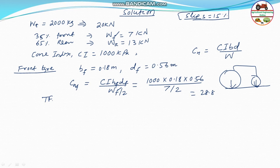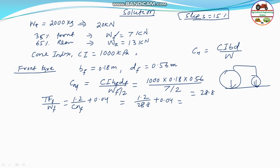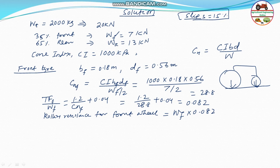For the rolling resistance of the front wheel, the Wismar-Luth formula gives: TF / WF = 1.2 / CNF + 0.04 = 1.2 / 28.8 + 0.04 = 0.082. Therefore, the rolling resistance coefficient for the front wheels is 0.082, and the total front wheel rolling resistance TF = 0.082 × 7 = 0.57 kN.